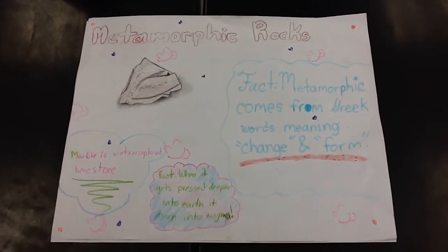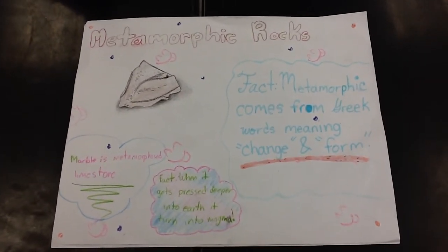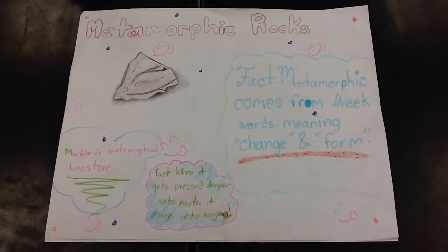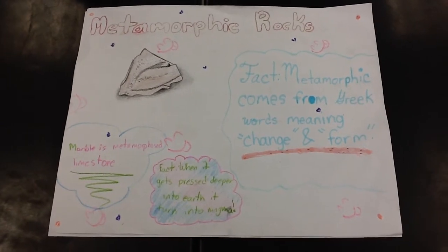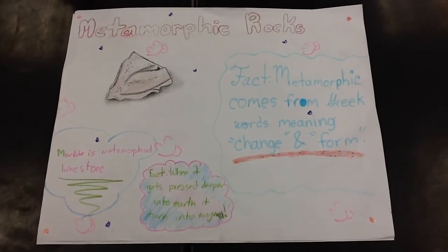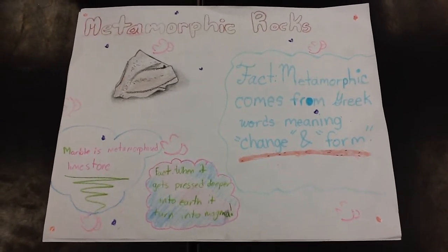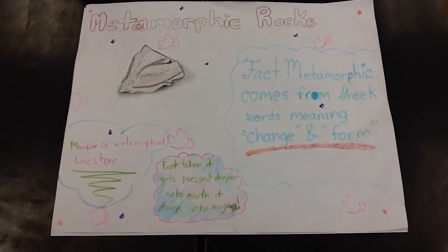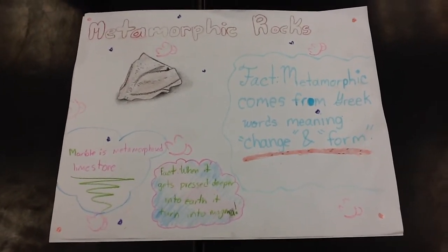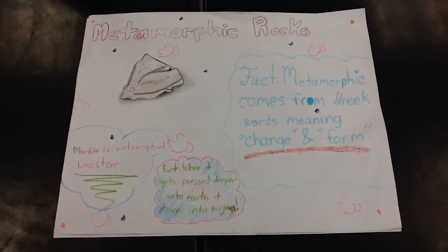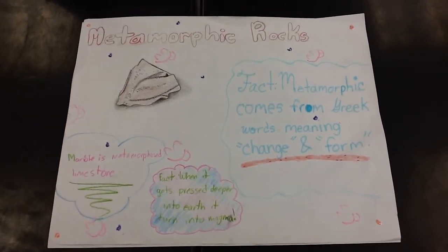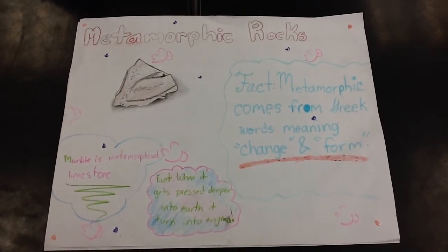Layers of sedimentary rock pressed against Earth's surface for millions of years, creating great pressure. Rocks combine when pressure, magma, heat, and underground chemicals change the rock, creating metamorphic rock.